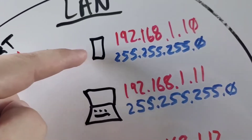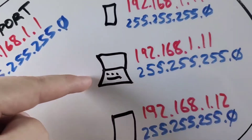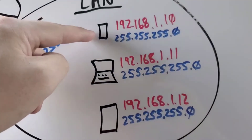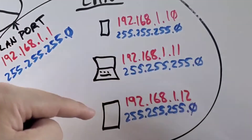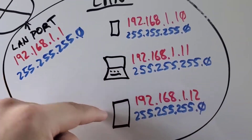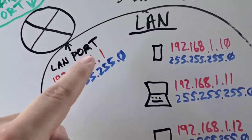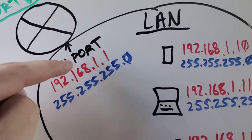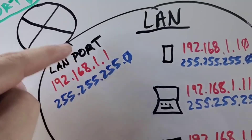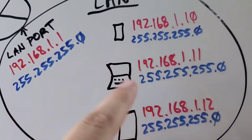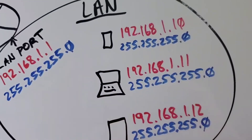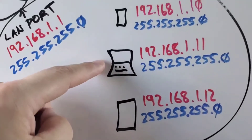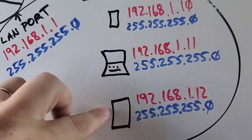All the devices will have the same subnet mask in this network, and all of the devices will have the same default gateway. The default gateway is how you get outside of this network — which is the router. It wouldn't do any good to make your default gateway this laptop or this phone.